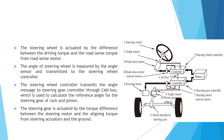The steering wheel is actuated by the difference between the drive torque and the road sequence torque from the road sense motor. The angle of the steering wheel is measured by the angle sensor and transmitted to the steering wheel controller. The steering wheel controller transmits the angle message to the steering gear controller through CAN bus, which is used to calculate the reference angle for the steering gear of the rack and pinion. The steering gear is actuated by the torque difference between the steering motor and the aligned torque from the steering actuator and the ground.